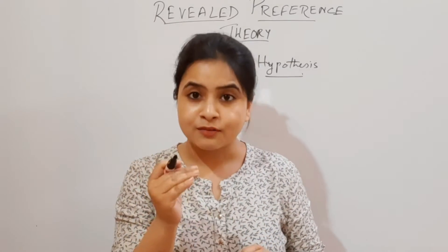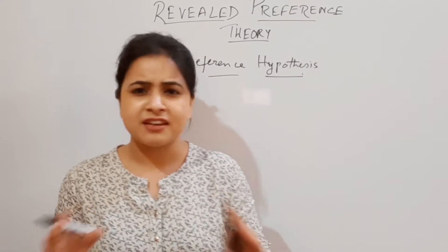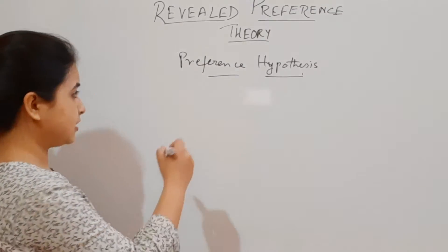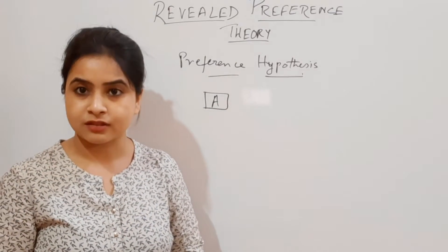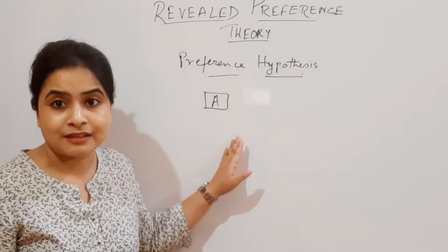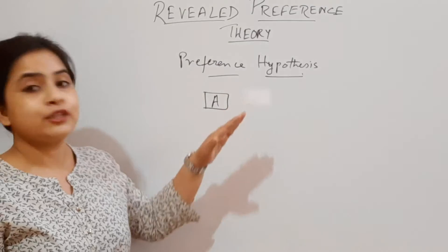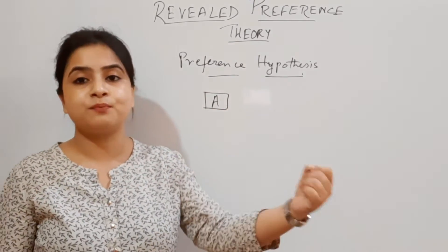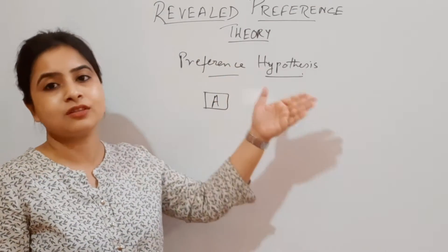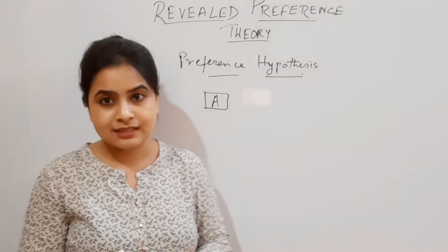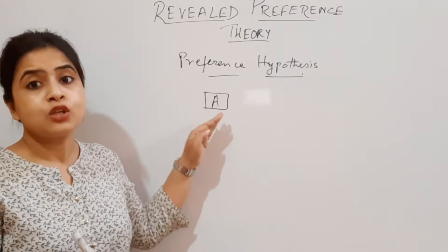To understand the strong and weak axioms, you have to understand from the beginning. The preference hypothesis says in simple language: if a consumer chooses a consumption bundle A in any given situation — choosing bundle A out of the alternative bundles available — then according to Paul Samuelson, the consumer has revealed his or her preference towards consumption bundle A.